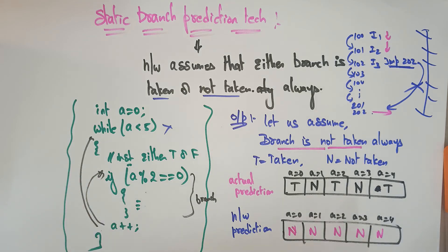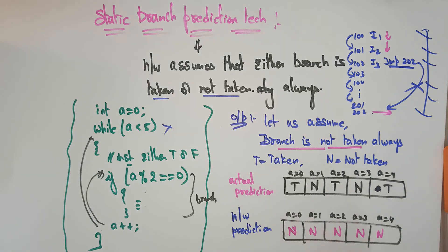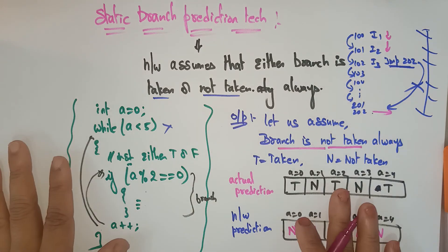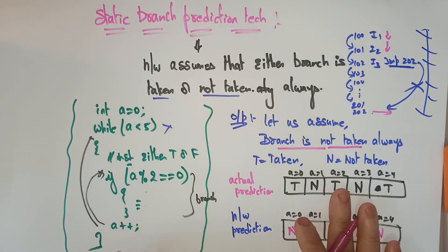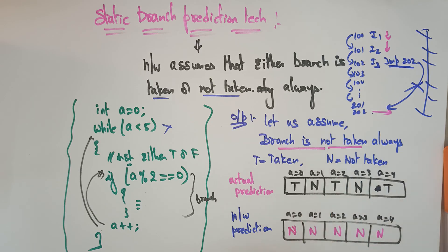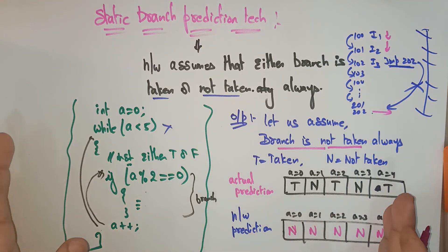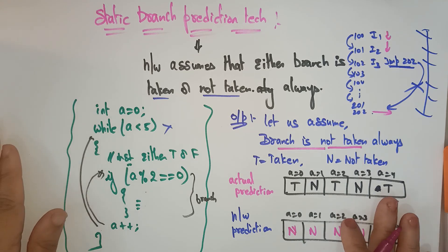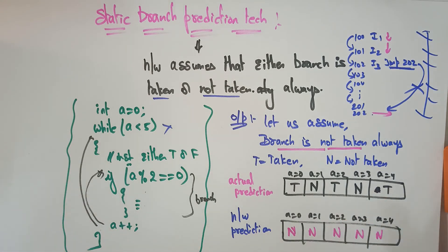Branch not taken means the next instruction is taken in sequence and it checks whether the condition is satisfied. In static prediction, you only consider branch taken or branch not taken. This strategy may or may not be accurate. The static prediction of taken or not taken can even be wired into the processor and cannot be changed once committed to hardware. In the next video I'll explain dynamic prediction.